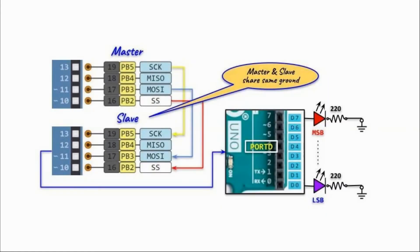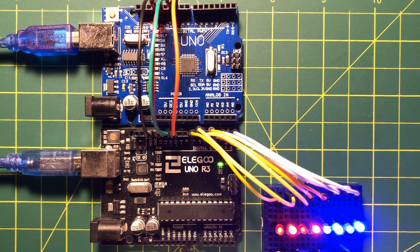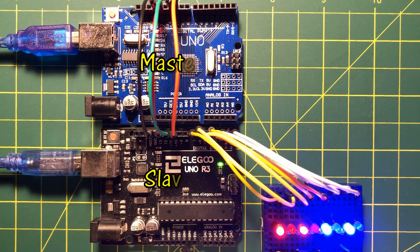To demonstrate SPI communication with the Arduino, we have two Arduinos — one master and one slave. The master will send a byte to the slave, and the slave will display the byte on eight LEDs connected to port D. In this demonstration, we are continuously sending the hexadecimal value 0xAA and then its one's complement, which is 0x55.